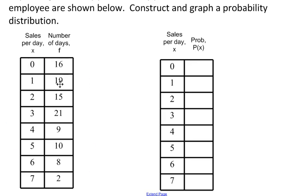So these numbers 16, 19, 15, 21, 9, 10, 8, and 2 should add up to 100, and they do. So to turn this table, this is a frequency distribution. This one right here is just a frequency distribution.